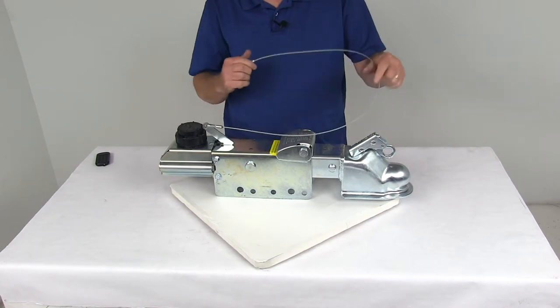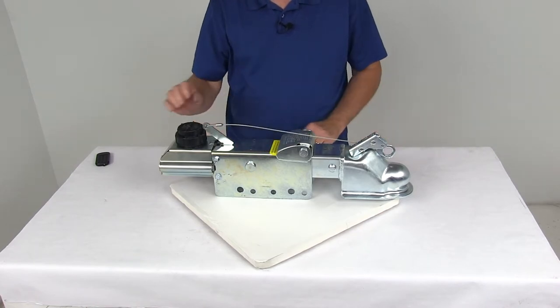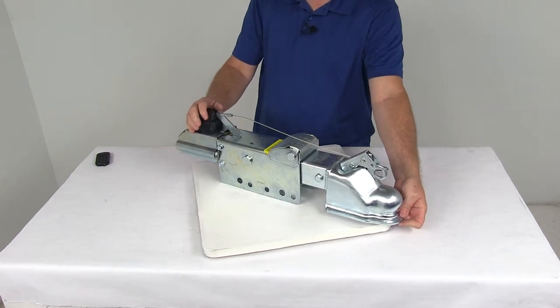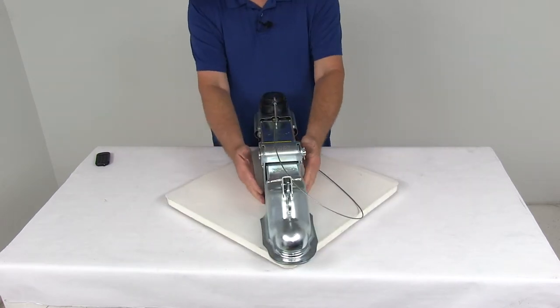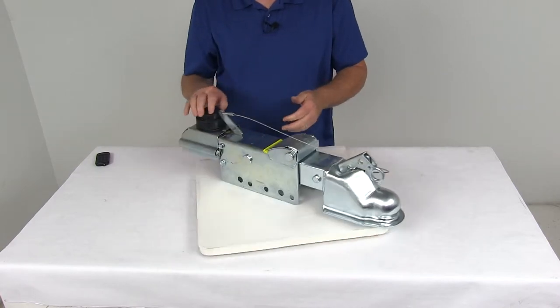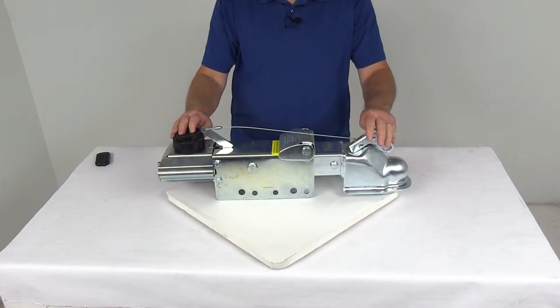Application for this actuator is on a disc brakes on the trailer. The ball size again fits a two and five sixteenths diameter. The mounting on this, it'll fit a three inch wide channel tongue. The weight capacity is 8,000 pounds. Maximum tongue weight is 800 pounds.